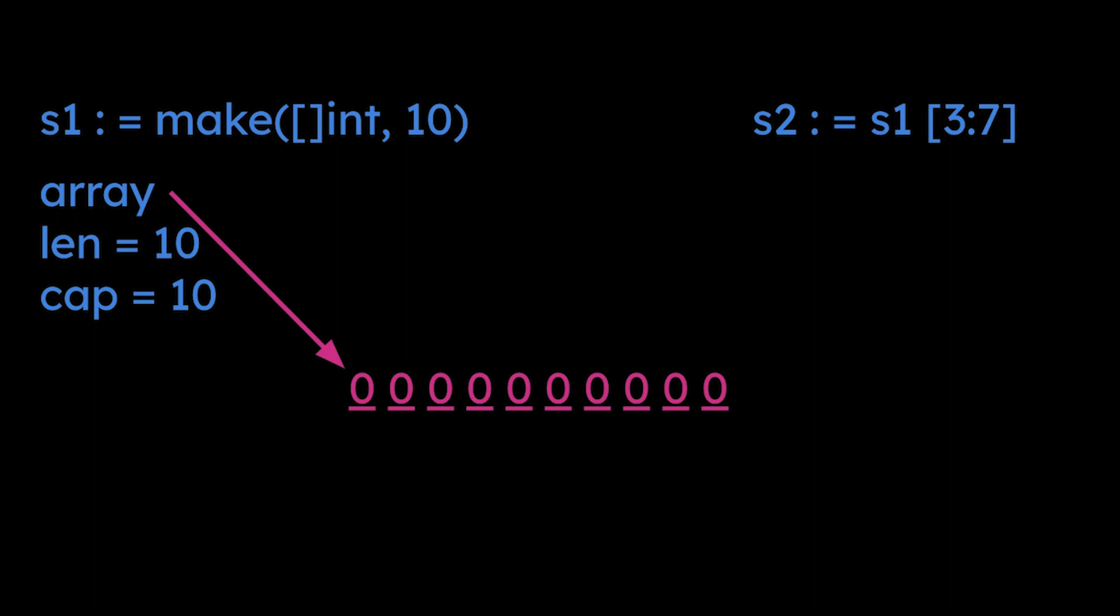One important point is that whenever you take a sub-slice of another slice, those two slices will share the same underlying array. Again, it's just a struct, so it's pointing to that fourth item in the array because we started with index three.